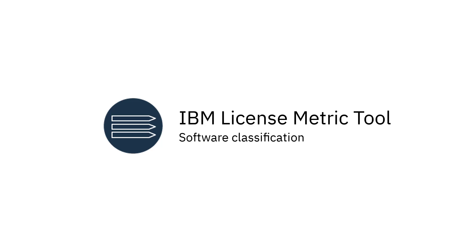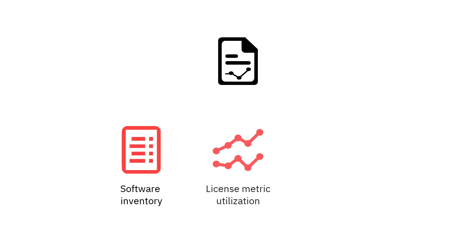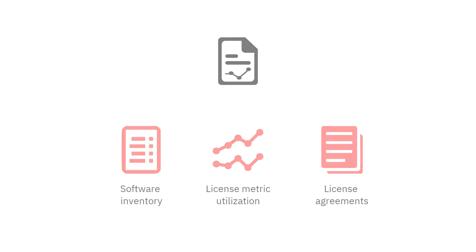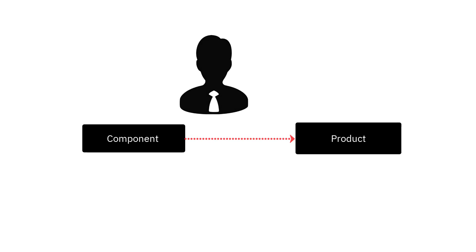Welcome to License Metric Tool videos. This video will explain how to classify your discovered software. The purpose of software classification is obtaining accurate reports of your software inventory and license metric utilization that are in line with your license agreements. Correct assignment of discovered components to products as part of which they were deployed is your responsibility and should be based on information available in your license agreements.